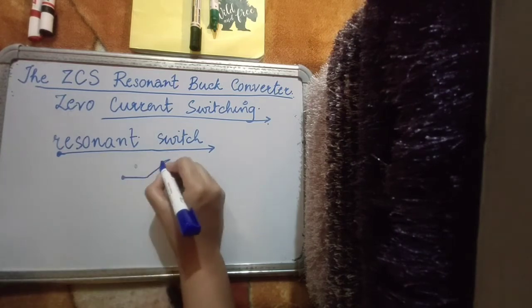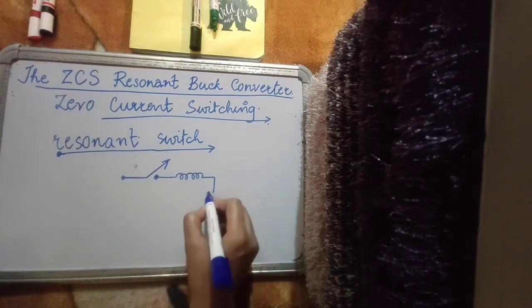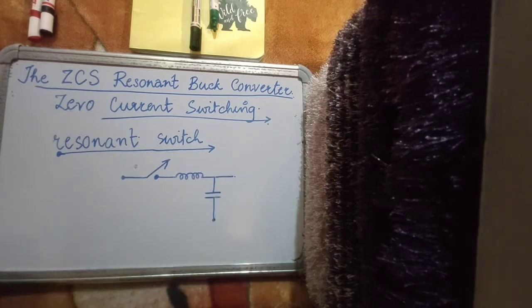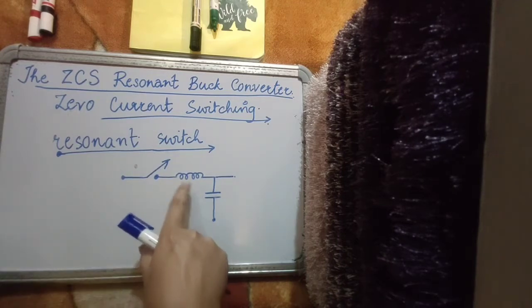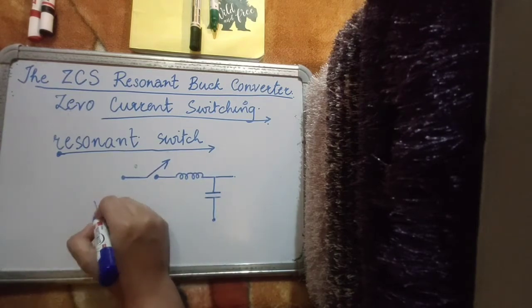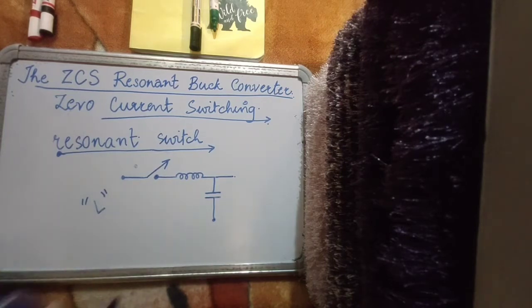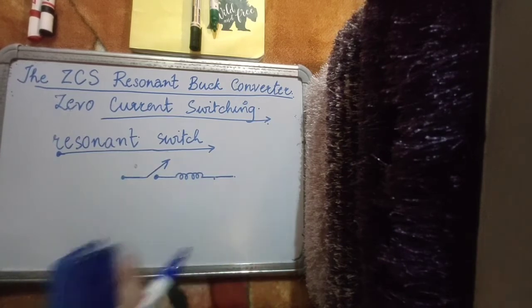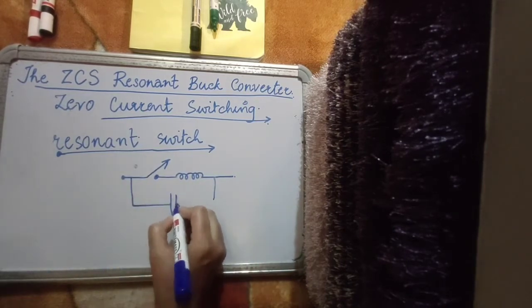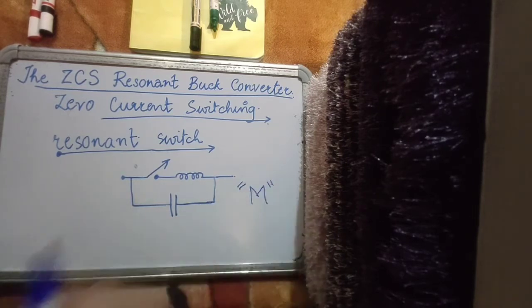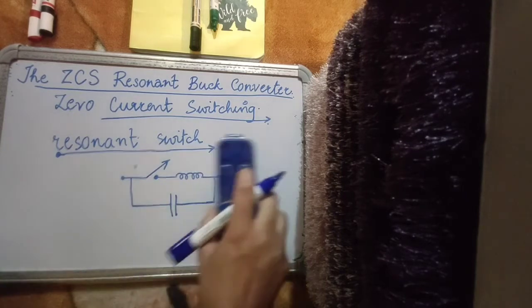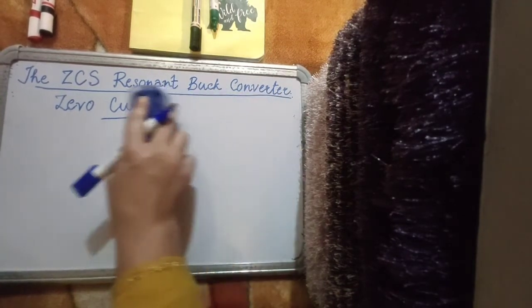There can be two types of resonant switch. One is the L-type resonant switch which has a switch and an L and C in parallel — this is the resonating tank which goes into resonance during some switching interval, and the PWM strategy of the switch is intelligently designed to take care of the resonant conditions. You also have an M-type resonant switch which has an inductor in series with the switch and a capacitor in shunt with this combination. Whether you use an L-type or M-type switch depends on the circuit topology. We will first start with the ZCS resonant buck converter which uses an L-type switch.